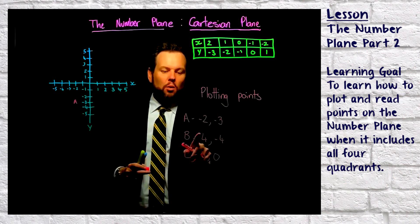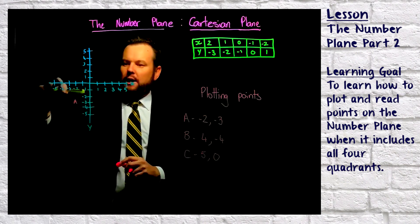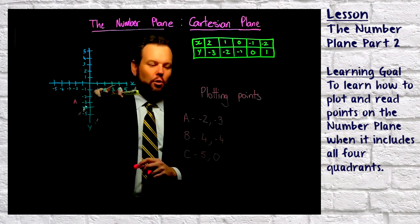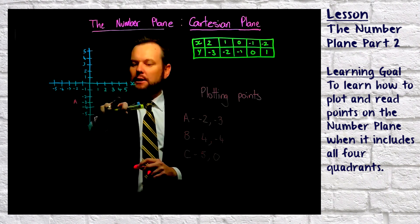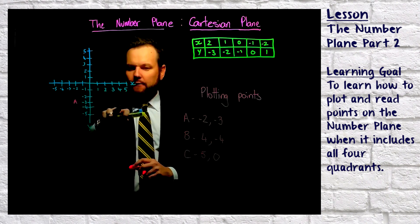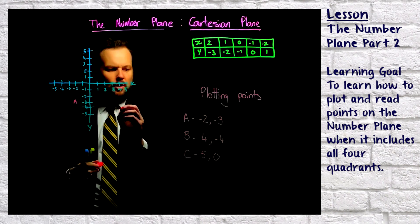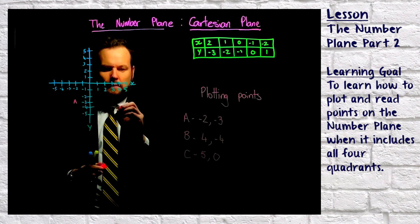Now B, we start at four. So let's have a look at our x-axis. We crawl along to four, here we are, and now we need to go down to negative four. That's where it's going to go there. So that is point B.